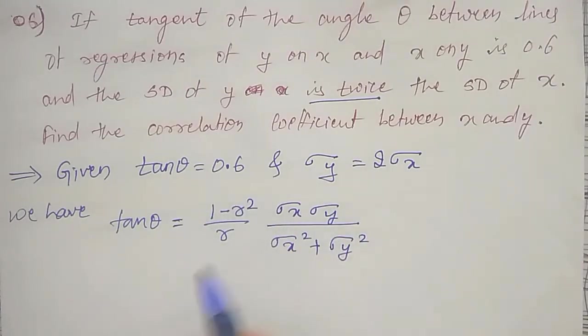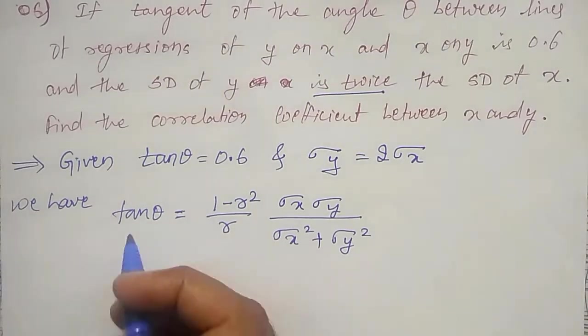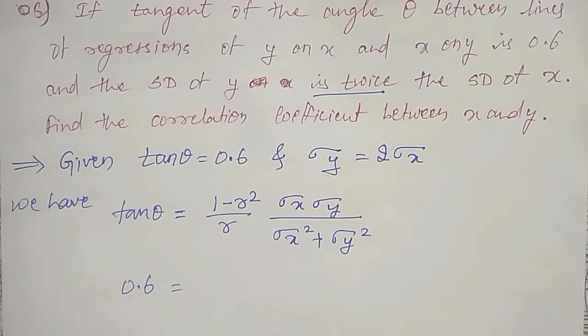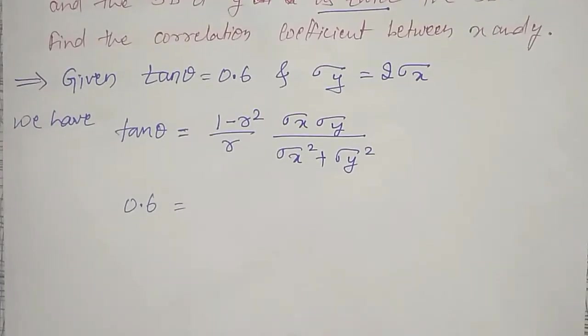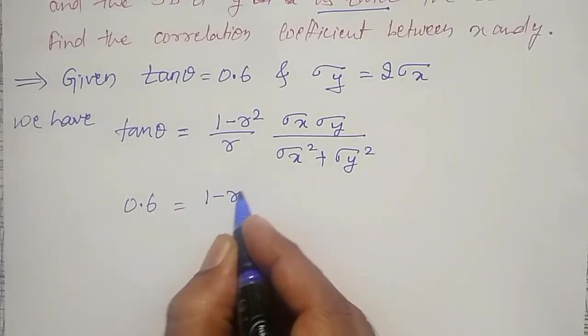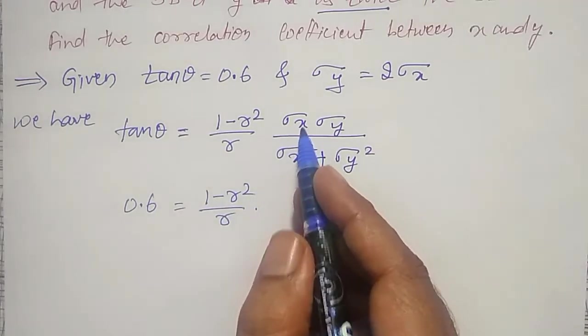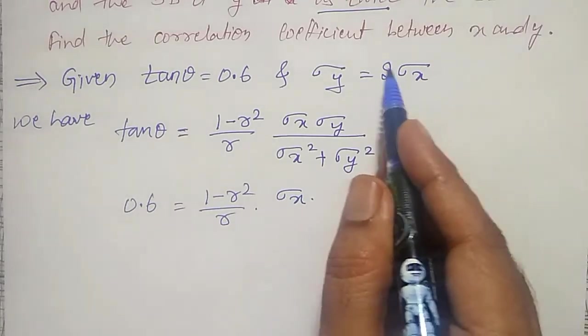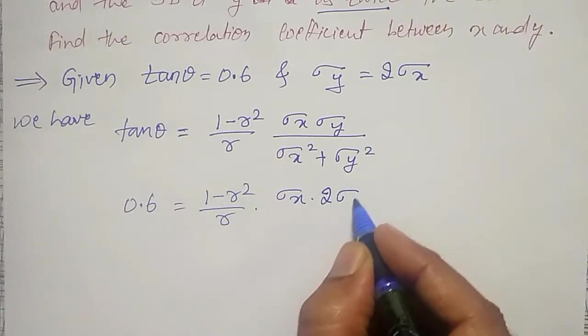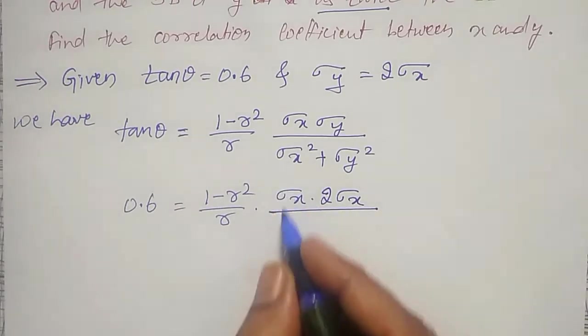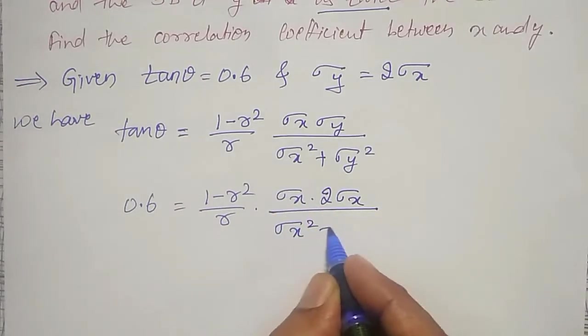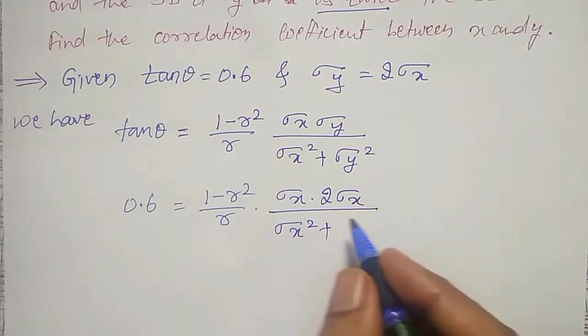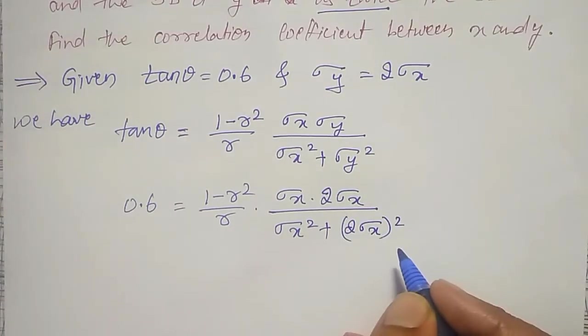In this formula, I will substitute the given things. Tan theta equal to 0.6, r we don't know. Sigma y equal to 2 times sigma x I will substitute: (1 minus r square) divided by r, times sigma x times 2 sigma x, divided by sigma x square plus (2 sigma x) square.